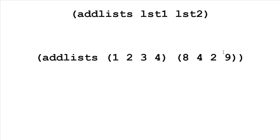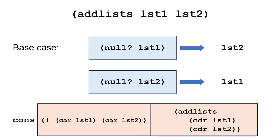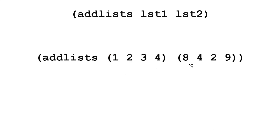Suppose we want to write a method to add two lists together, also handling the case where the lists aren't equal in length. When we add elements pairwise — first elements together, second elements together, and so on — we should get 9, 6, 5, 13. The structure has two base cases: if the first list is null, return the second list; if the second list is null, return the first list. If both are null, the first case matches and returns list two, which is null. The recursive case adds the cars together and recursively adds the cdrs.